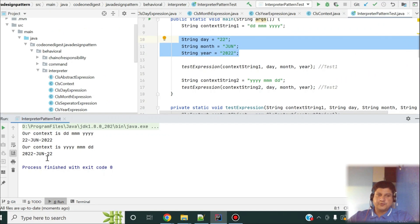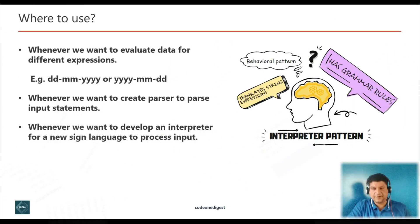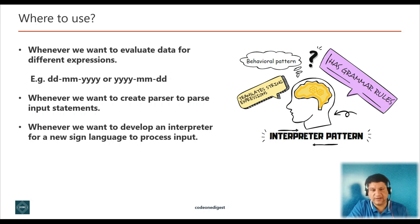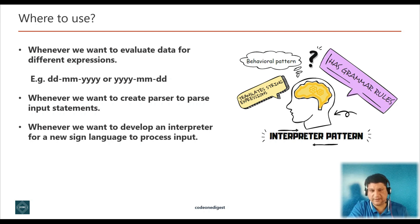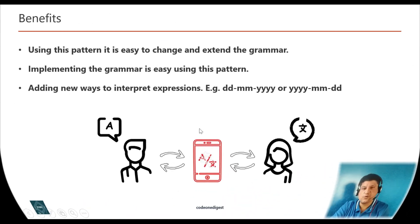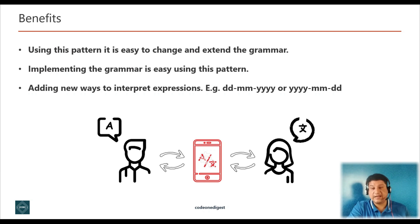You may have a scenario where you want to create a parser — there you can use this pattern. You can use interpreter pattern whenever you want to evaluate data for different expressions, whenever you want to create a parser to parse statements or take inputs, and whenever you want to develop an interpreter for a new sign language to process user-provided inputs. The advantages include: it is easy to change and extend the grammar, easy to implement the grammar, and easy to add a new way to interpret expressions.